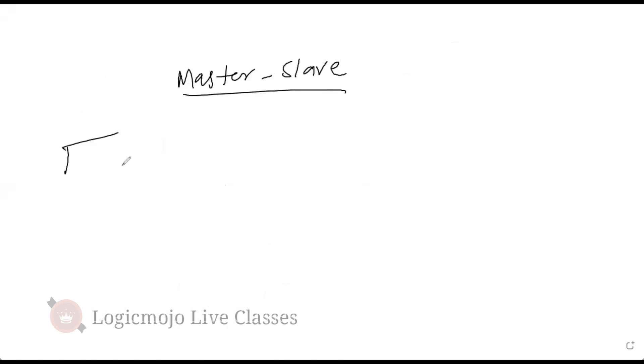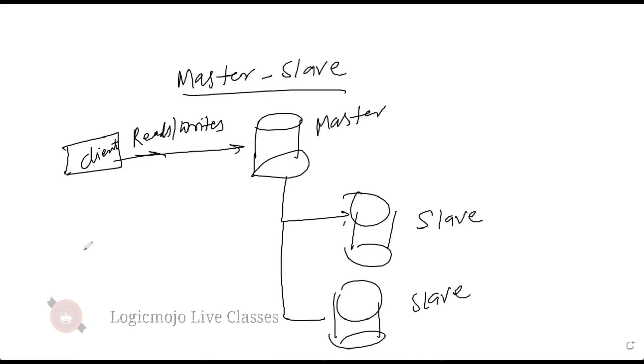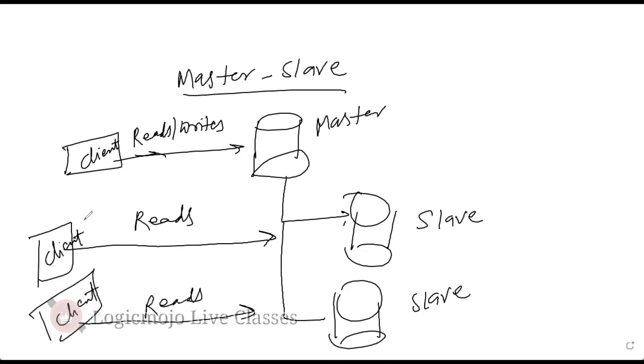So what happens in the master-slave? You have a client here, and it reads or writes to a database. So first, what you do is for all the writes or reads, you can use one dedicated system as master. And what you do is you replicate the data to other nodes as well, and you tell them as a slave. And any read, anything comes from the client. So what happens is, the writes will always go to the master. So whatever writes you do, there will be only one single node where it will be doing a write.